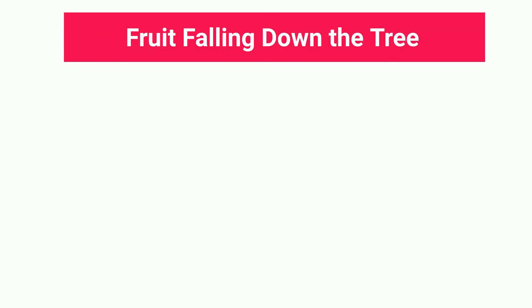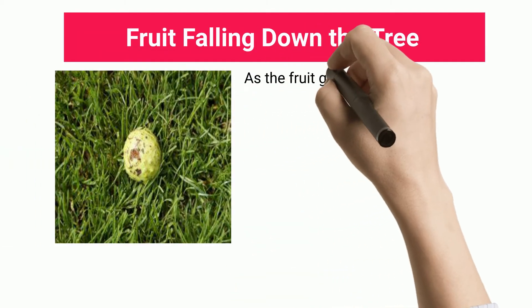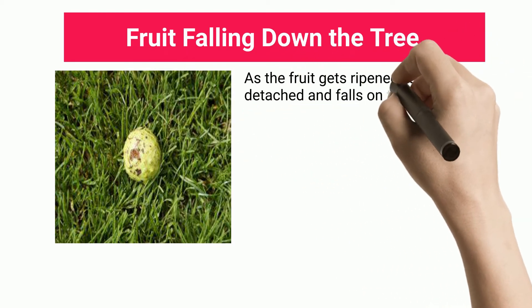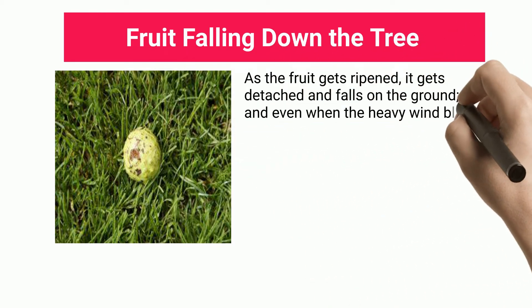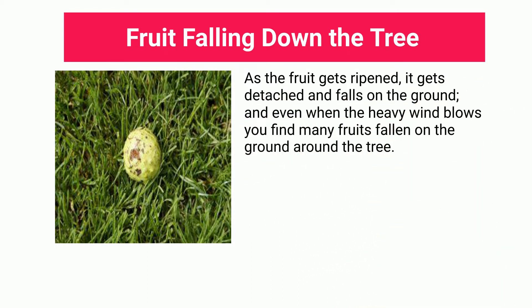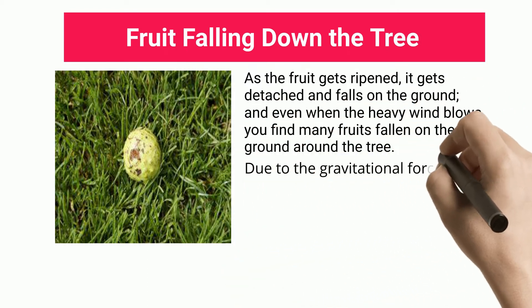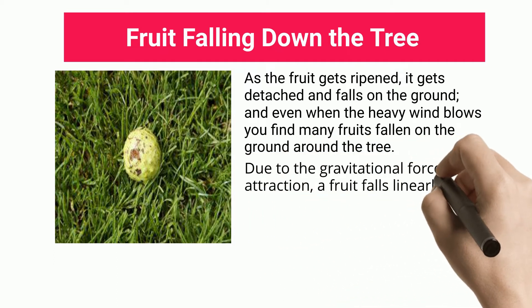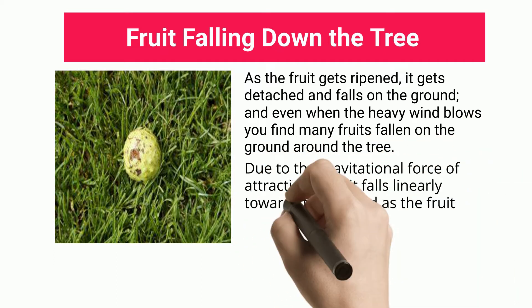Fruit falling down the tree: As the fruit gets ripened, it gets detached and falls on the ground. When the heavy wind blows, you find many fruits fallen on the ground around the tree. Due to the gravitational force of attraction, a fruit falls linearly towards the ground as the fruit detached from the node of a branch of a tree.